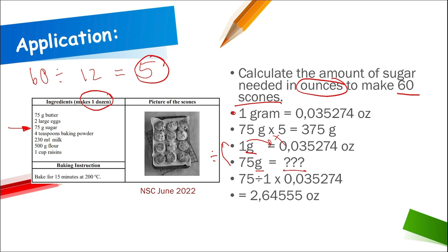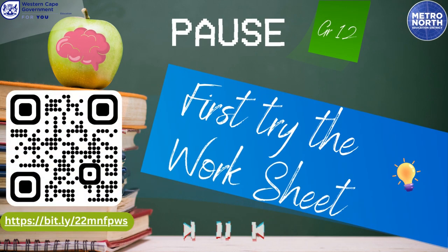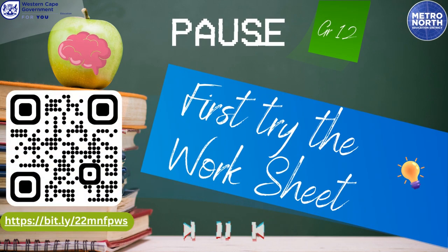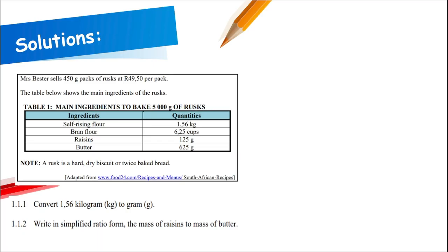Now let's look at the worksheet solutions. Question 1.1.1: convert 1.56 kilograms to grams. We multiply by 1,000 and get 1,560 grams.